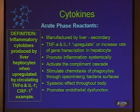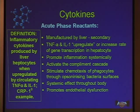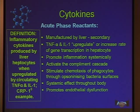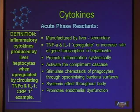Acute phase reactants are secondary cytokines manufactured in the liver in response to primary cytokines such as TNF-alpha and interleukin-1. Those upregulate hepatocytes to produce these reactants. CRP is the main one we talk about — it activates the complement cascade and stimulates chemotaxis through opsonizing bacteria surfaces. It's like painting a target with a laser in wartime so the missile knows where to strike. That's opsonization: painting the target so the white blood cell can phagocytize and kill it.